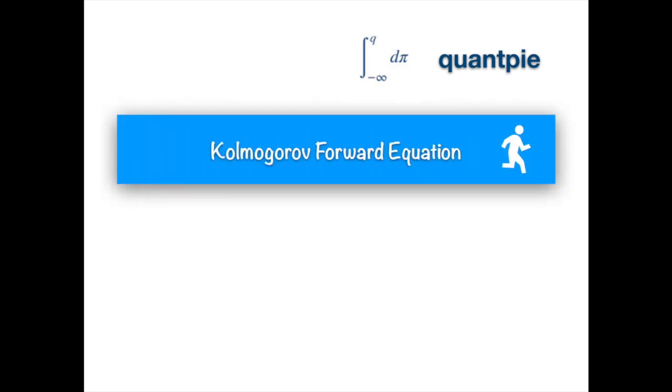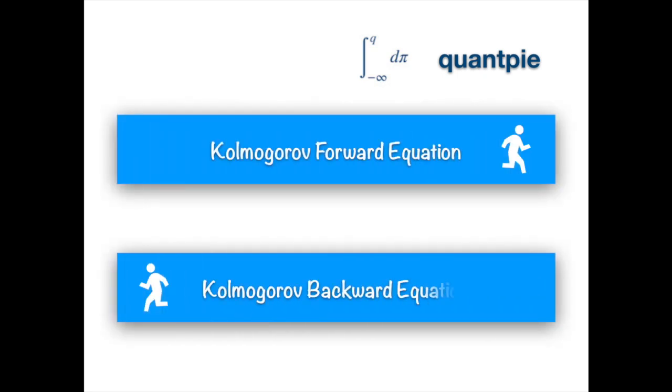Good to see you again Pauls. So today we are going to discuss a very special topic. We are going to explain that the Kolmogorov forward equation and the Kolmogorov backward equation form an adjoint system. What it means is that the linear differential operators associated with the forward and the backward equations are adjoints of each other.